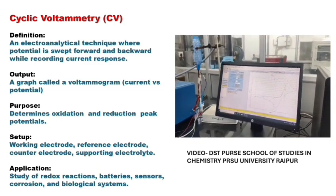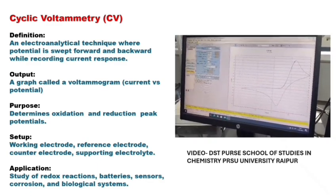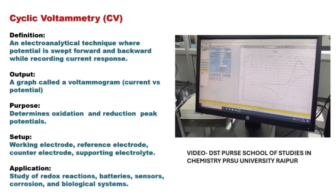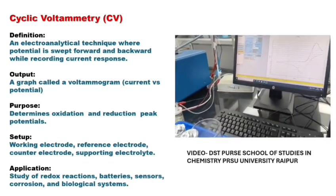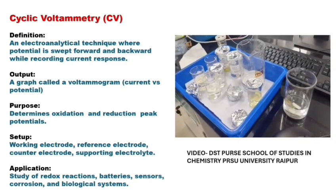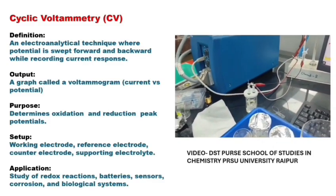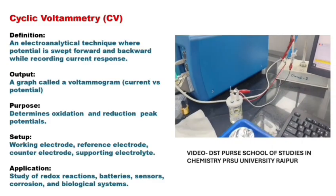Cyclic voltammetry is an electroanalytical technique where potential is swept forward and backward while recording the current response. A graph called the voltammogram between the current versus potential is observed. It determines the oxidation and reduction peak potentials.